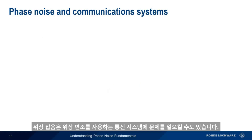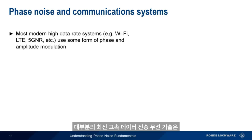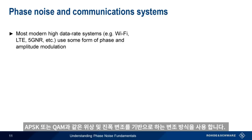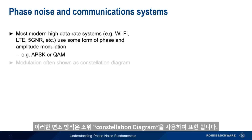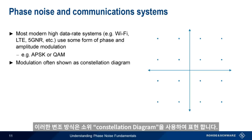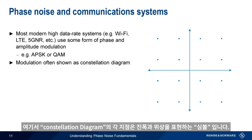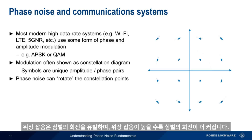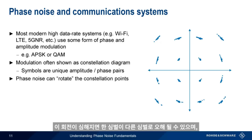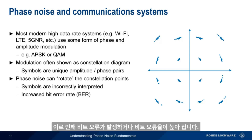Phase noise can also create problems for communication systems that use some form of phase modulation. Most modern high data rate wireless technologies use modulation schemes based on phase and amplitude modulation, for example APSK or QAM. These modulation schemes are often represented using so-called constellation diagrams, which are polar diagrams where each point in the constellation is a symbol with a unique amplitude and phase. Phase noise causes a rotation of the constellation, with higher levels of phase noise creating greater rotation of the points. If this rotation becomes high enough, it's possible for one symbol to be mistaken for another, and this leads to bit errors or a higher bit error rate.